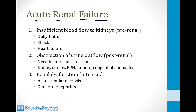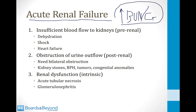Acute renal failure typically manifests as rising levels of BUN (blood urea nitrogen) and creatinine found on blood work. These substances are filtered by the kidneys, so when the kidneys start to fail, their levels rise in the blood. We will discuss the three mechanisms by which patients acutely develop increased BUN and creatinine.